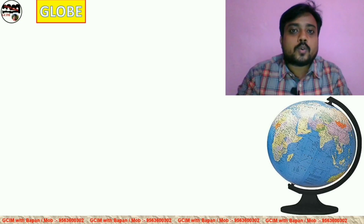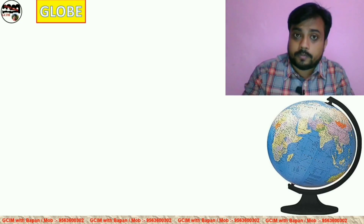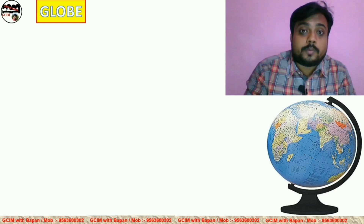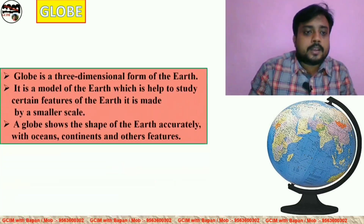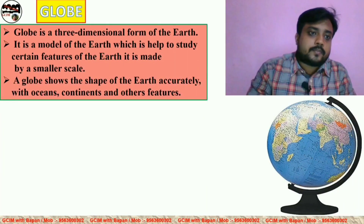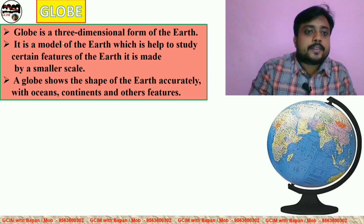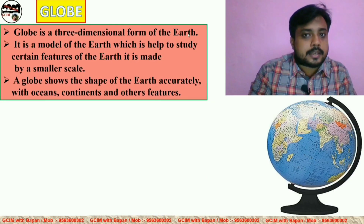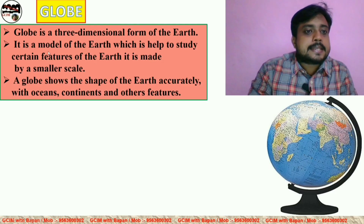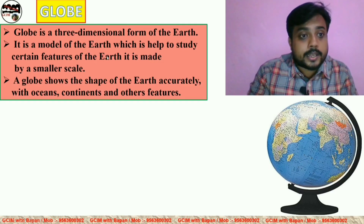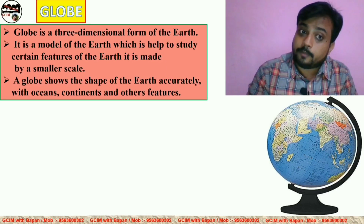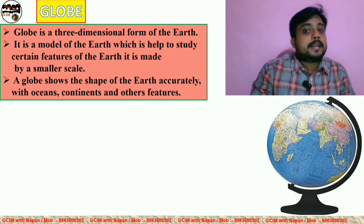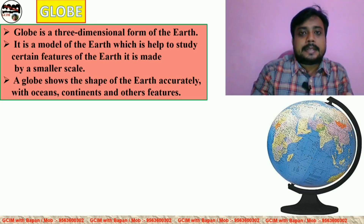Now I will show you the different points and definition of the globe. These are the different points. The first point: globe is a three-dimensional form of the earth. Number two: it is a model of the earth which helps to study certain features of the earth. It is made by a smaller scale — this is a very important point you have to remember. Globe is a model of the earth and it is made with the help of a small scale.